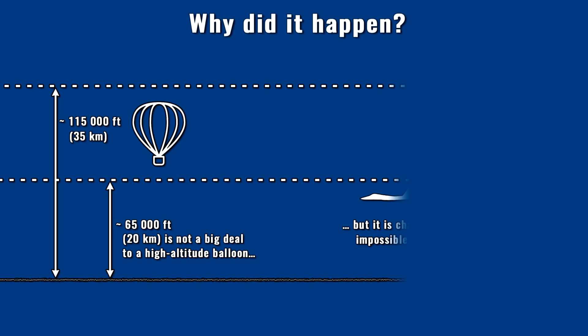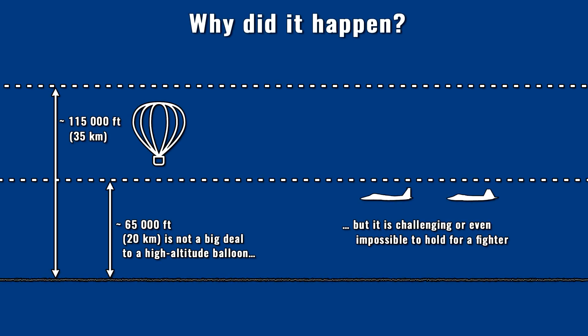Many people claimed it would have been enough to fire a few rounds into the balloon with the Vulcan rotary cannon of the Raptor. The balloon would have slowly descended and crashed over ground or water. However, the primary reason for using a missile was that the task simply could not be solved with the M-61 Vulcan cannon, for several reasons.